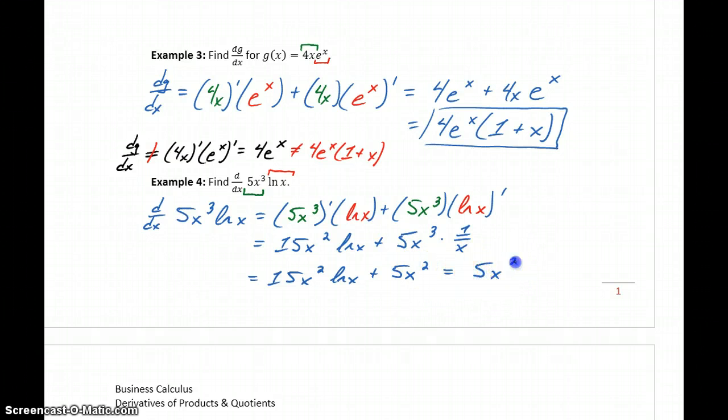Which means we can factor out 5x² times (3 natural log x + 1).